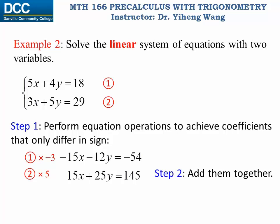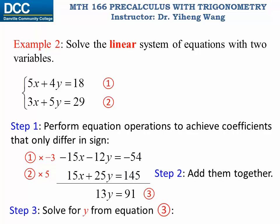And now for step two, if I add these two equations together I notice that now variable x can be canceled out. Let me add them together. x gets canceled out, so I'm left with 13y, that equals negative 54 plus 145, and that is 91. Therefore this is my equation three, and from equation three I can easily solve for y, which is 7.